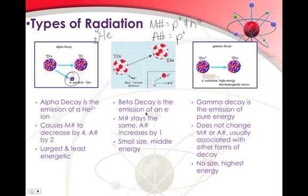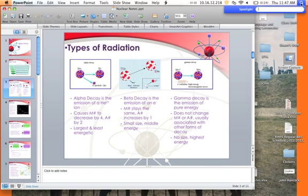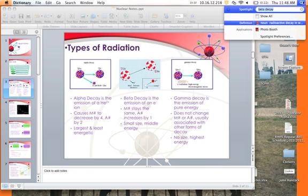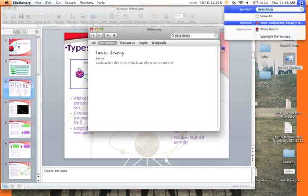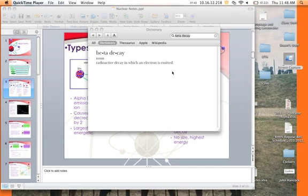Then you have a beta decay, and the beta decay is really interesting. It's the emission of an electron, and you're probably thinking, wait a minute, how on earth does an electron come from a nucleus? Well, I have a nice little video that I am going to show you. Beta decay right here. So watch this cute little movie.